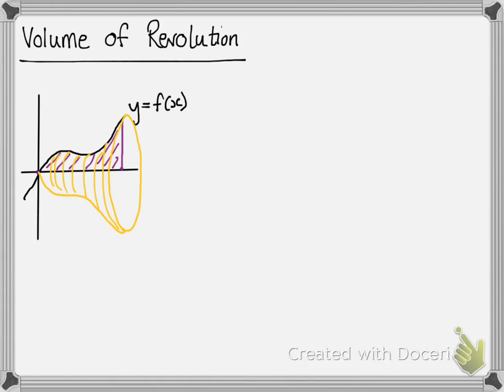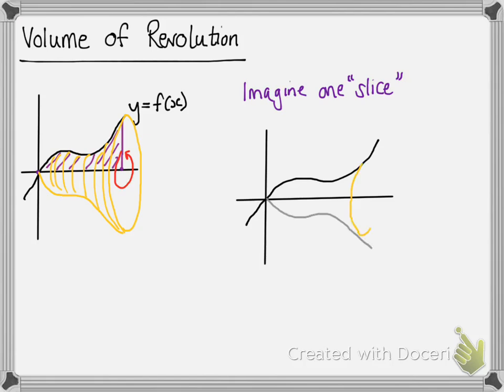So how do we find that volume? Well, if we imagine that we take one slice out of that shape, we can figure out how to work out the volume of the whole shape. If we take one slice out of it, we can work out the volume of that particular slice because it's a very, very skinny cylinder. Remember, delta x represents a very small change in x — a really thin slice — so we can say it was the volume of the cylinder at that point.